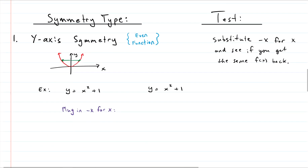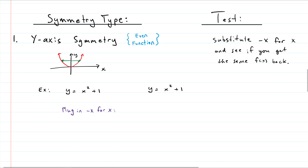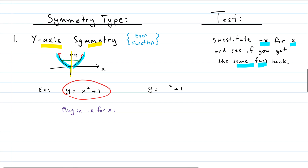Now let's move on to tests for the different types of symmetry, starting with the y-axis symmetry test. Whatever happens on the right is mirrored on the left. The test is to plug in negative x for x, then simplify and see what you get. If you get the exact same function back, then we have y-axis symmetry. For our function y equals x squared plus one, we substitute negative x in for x.